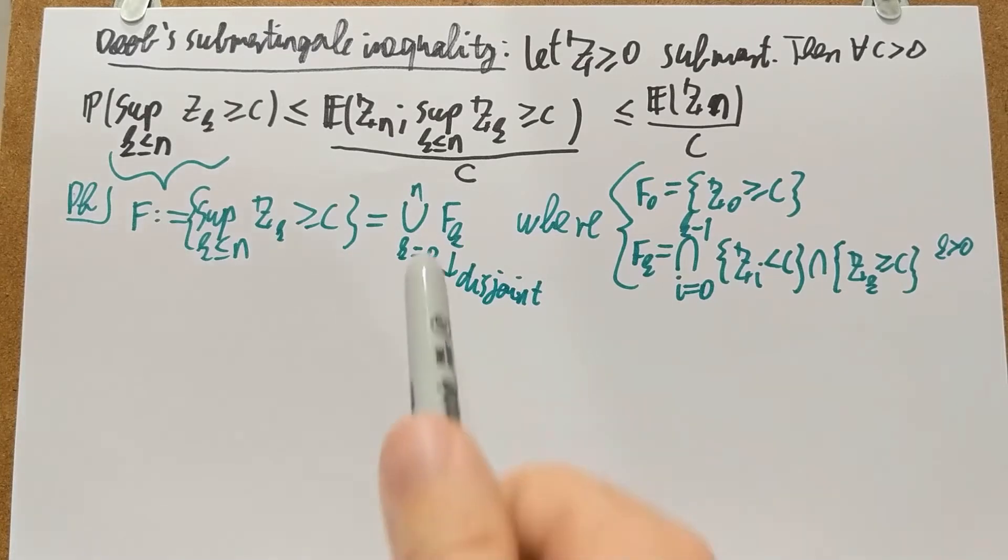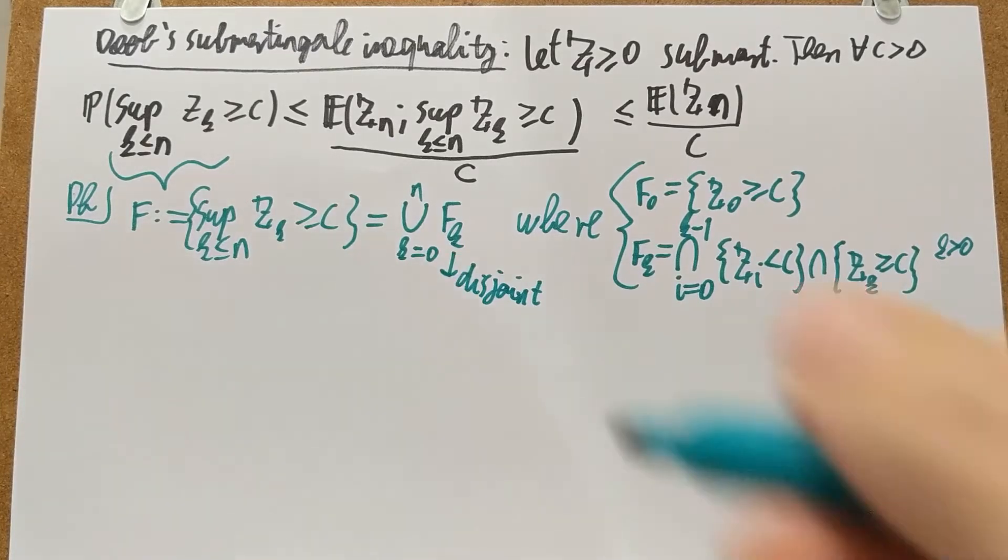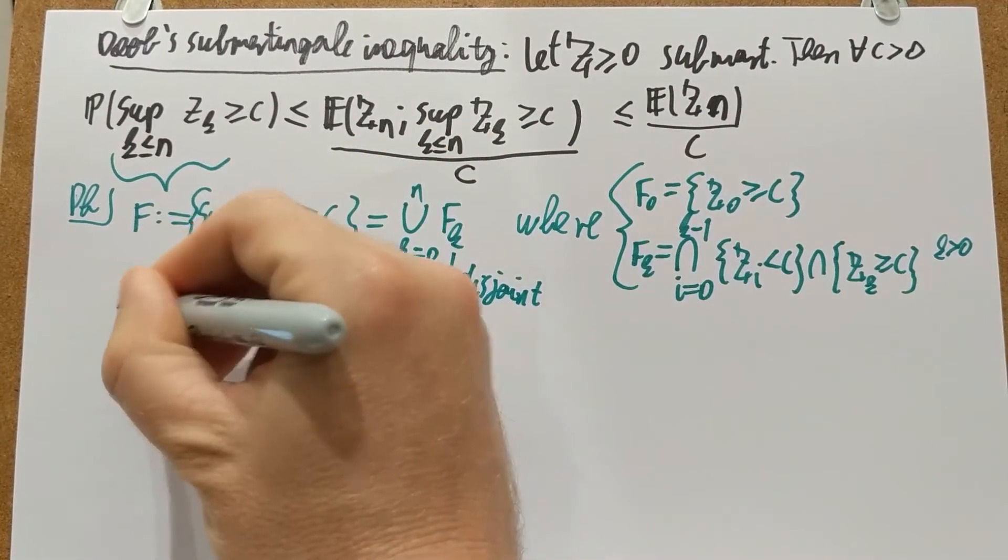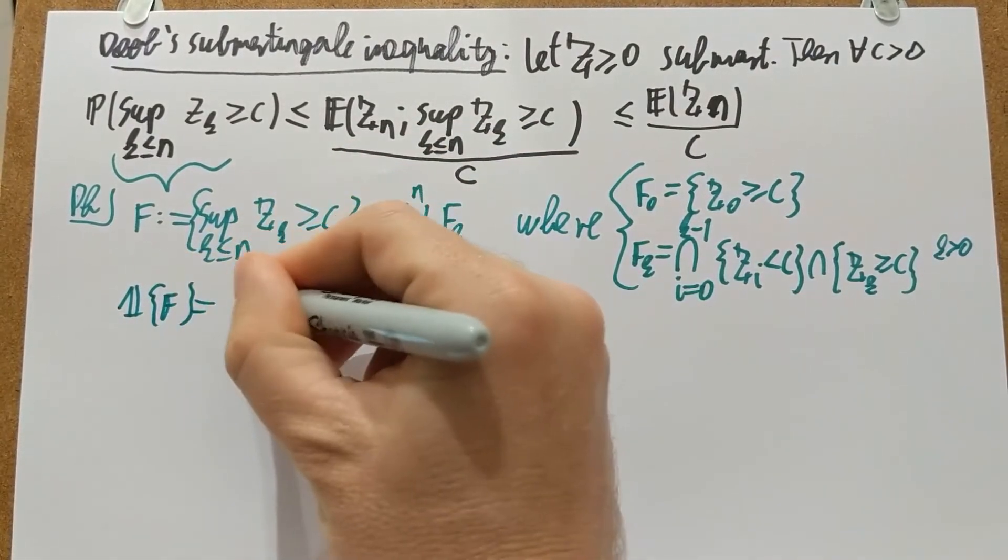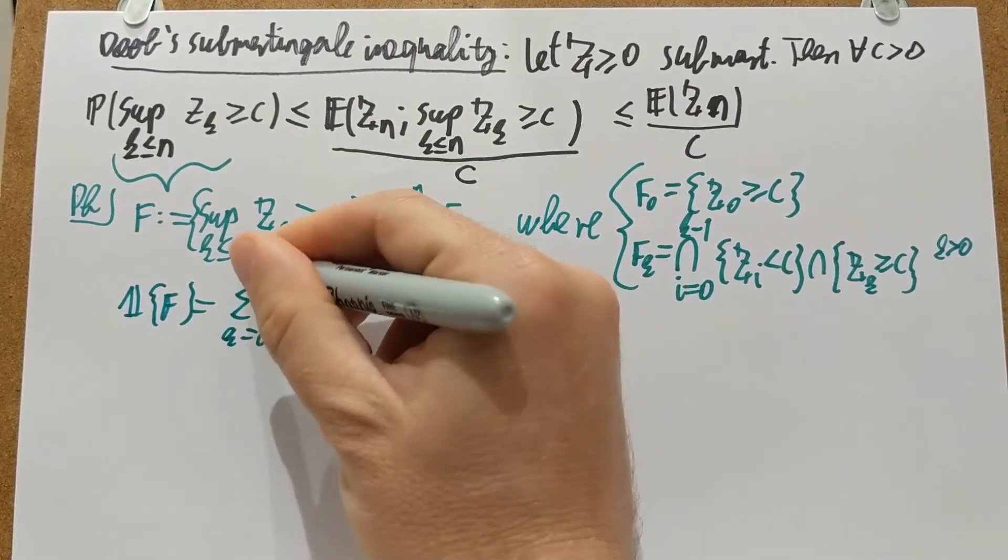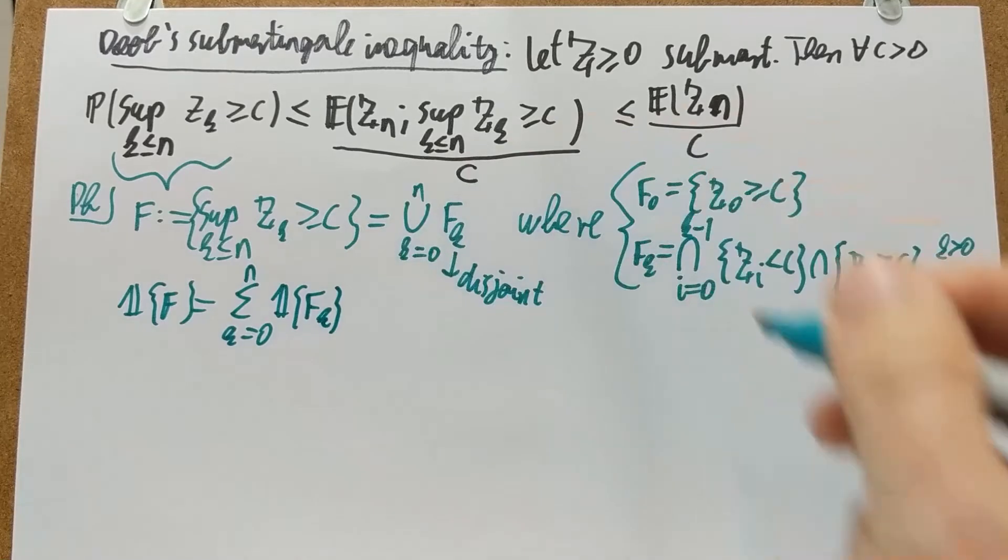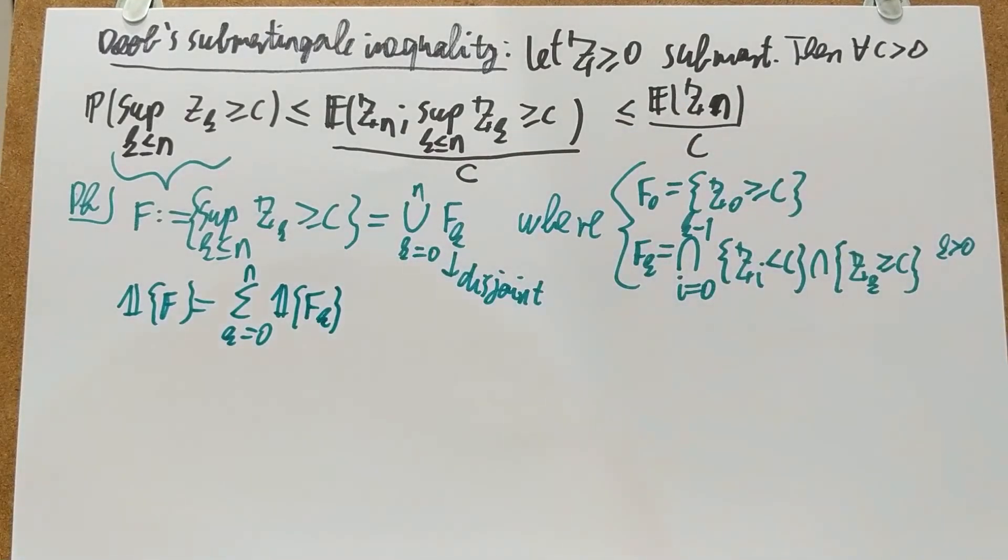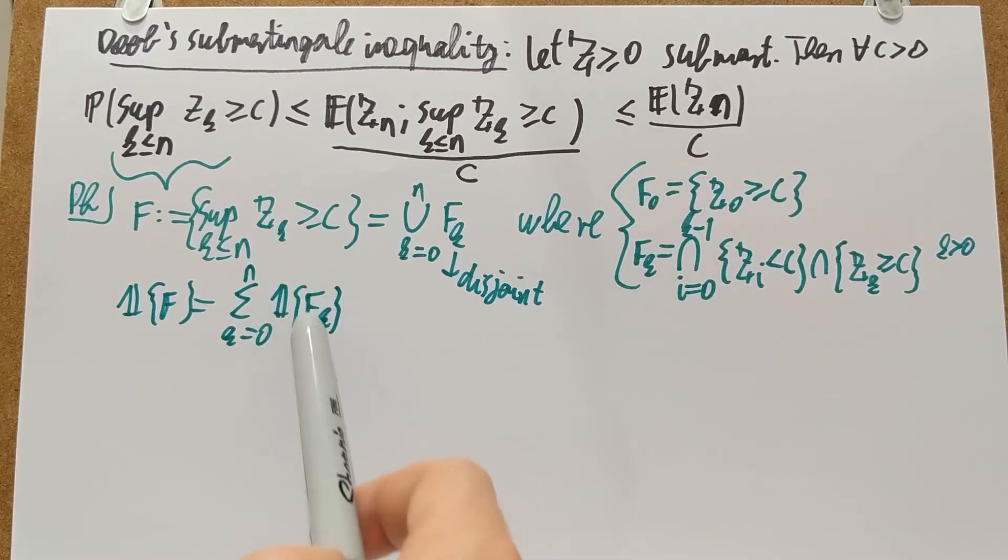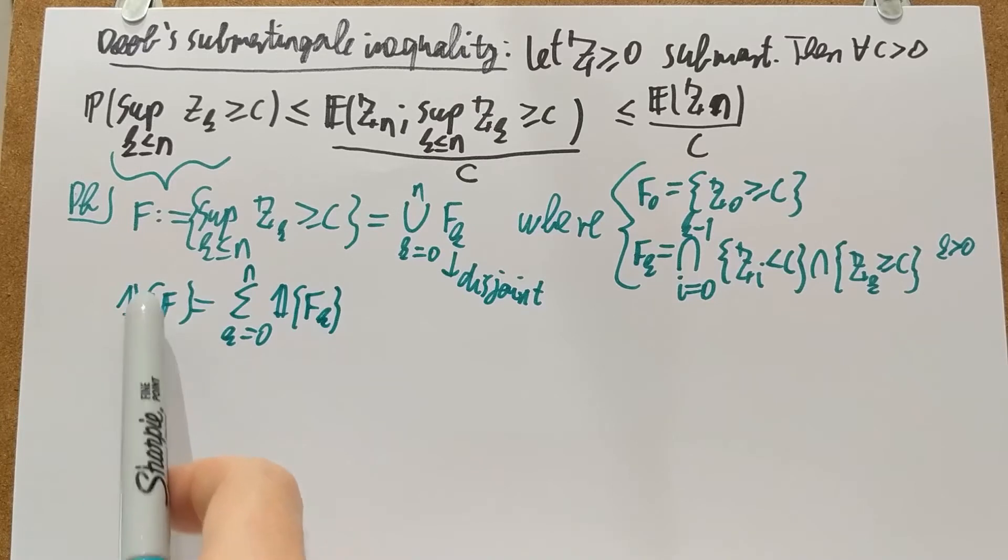So this is a disjoint union. And that immediately implies that the indicator of F is just going to be the sum of the indicators of the F_K's. Because the indicator of the F_K's, at most one of these can be 1. All of the others must be 0. And if one of these is 1, that exactly means that the event F occurs. So then the left-hand side is also 1. So that just follows from being a disjoint union.